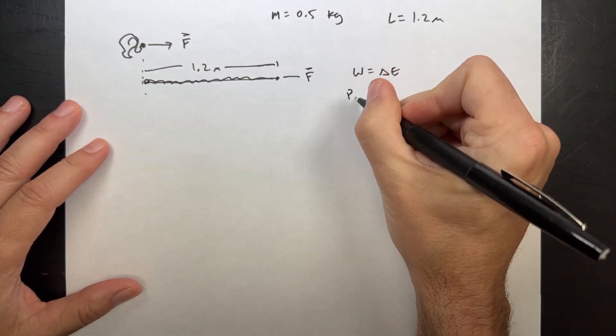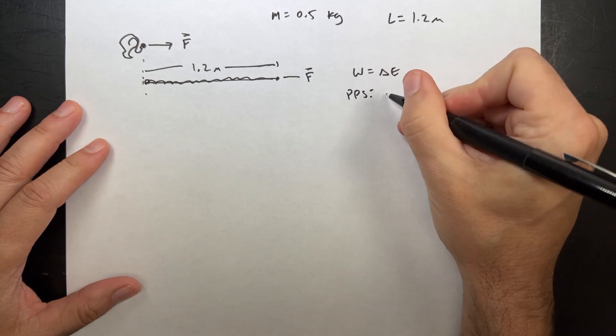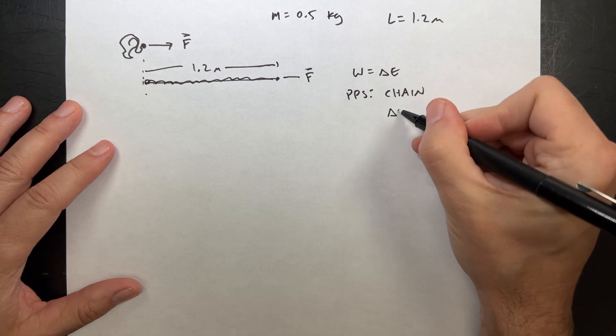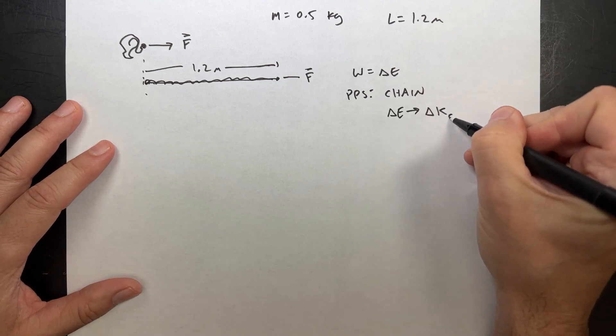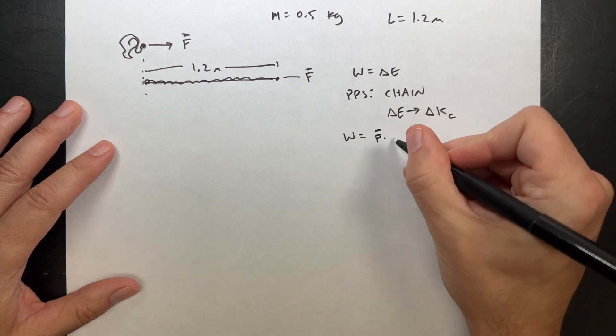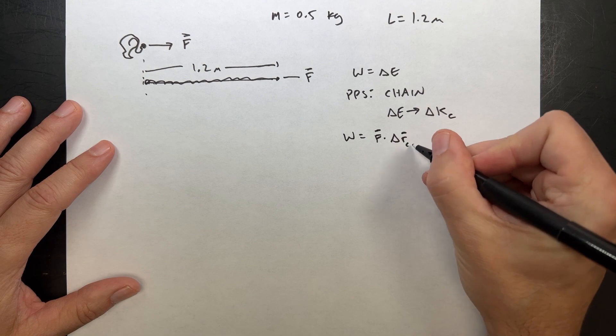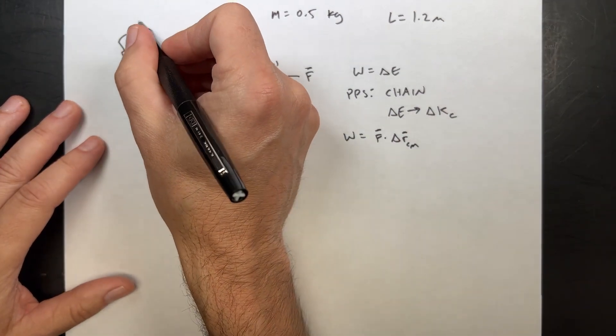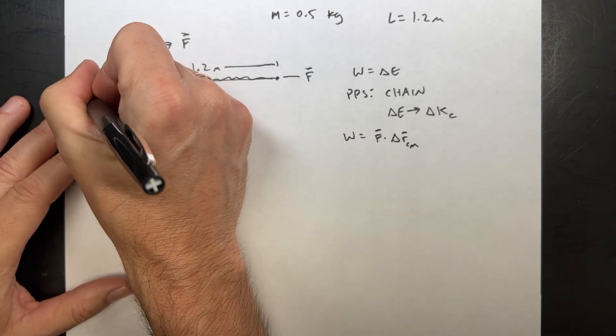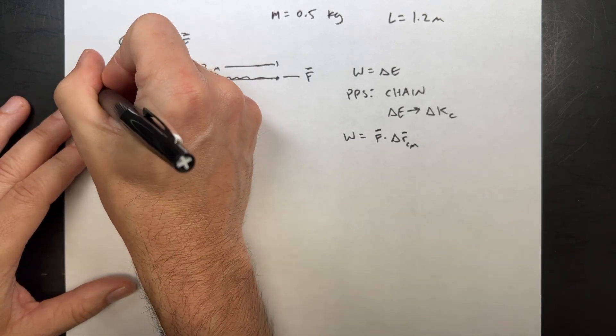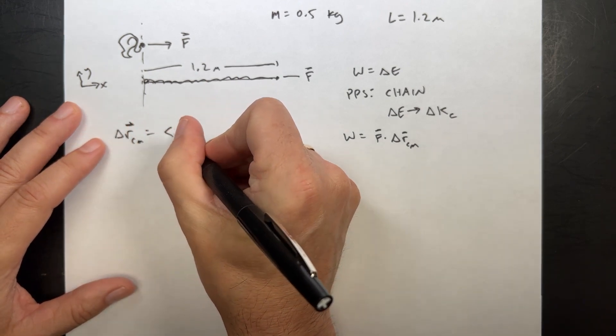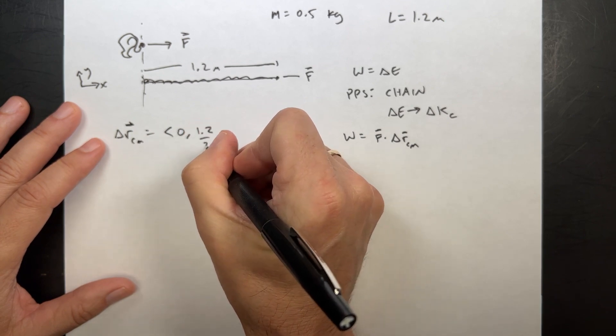So let's use work energy. Work is a change in energy, and I'm going to use the point particle system of the chain. In that case, the only kind of change in energy I can have is a change in kinetic energy of the center of mass. And the work is going to be the force dot the displacement of the center of mass.